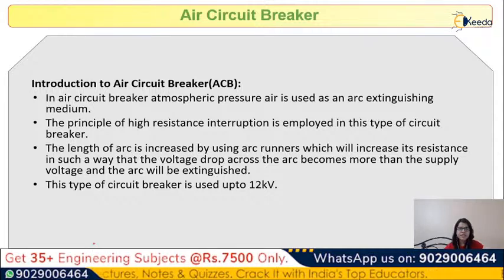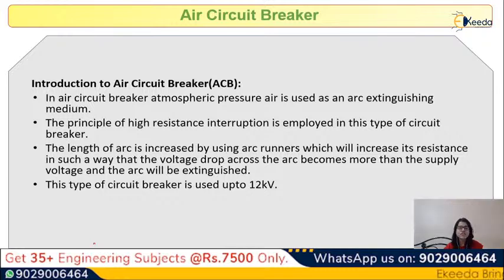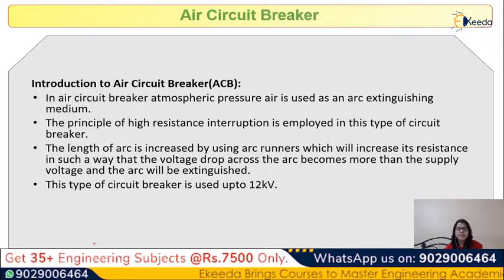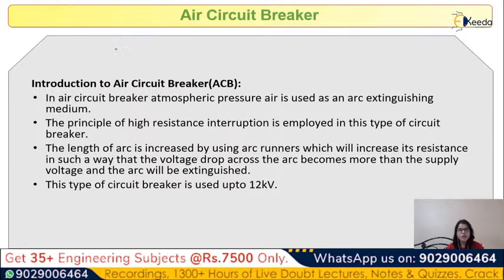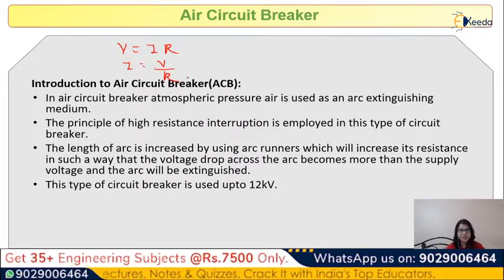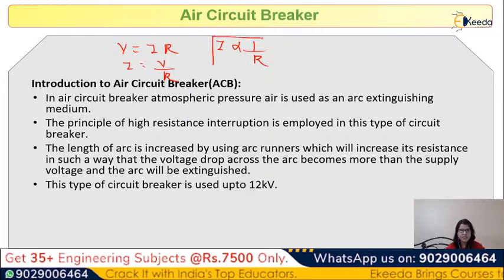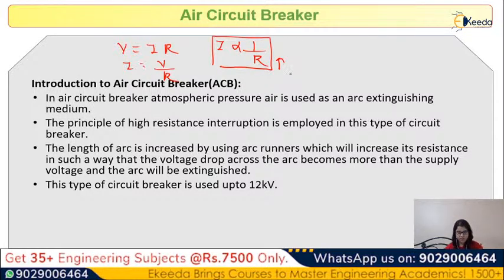In the case of the Air Circuit Breaker (ACB), atmospheric air is used for arc extinguishing. The principle used here is high resistance interruption. The arc is a high-density current. By Ohm's law, I = V/R, so current is inversely proportional to resistance. If we increase resistance, the current decreases and the arc is extinguished.